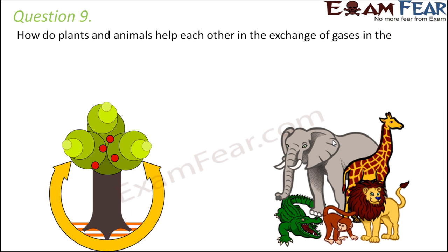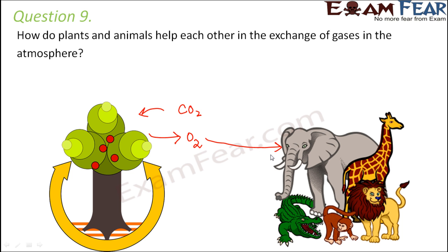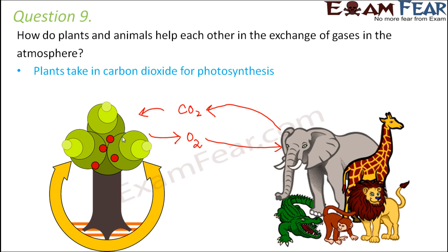Question number nine: how do plants and animals help each other in the exchange of gases in the atmosphere? Plants carry out photosynthesis — they take in carbon dioxide from the atmosphere and give out oxygen. This oxygen is taken up by animals during respiration, and they give out carbon dioxide, which in turn is taken up by the plants. So whatever plants give, animals take, and whatever animals give, plants take.